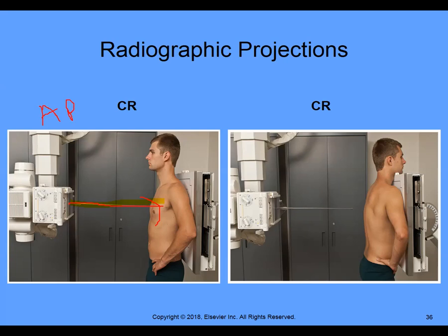In the second picture, the central ray is going in posteriorly — this is the posterior aspect of the patient — and exiting anteriorly. So this becomes a PA, posterior anterior projection. We're simply describing the path of how the X-ray travels through the patient: the first picture is anterior posterior, and the second is posterior anterior.